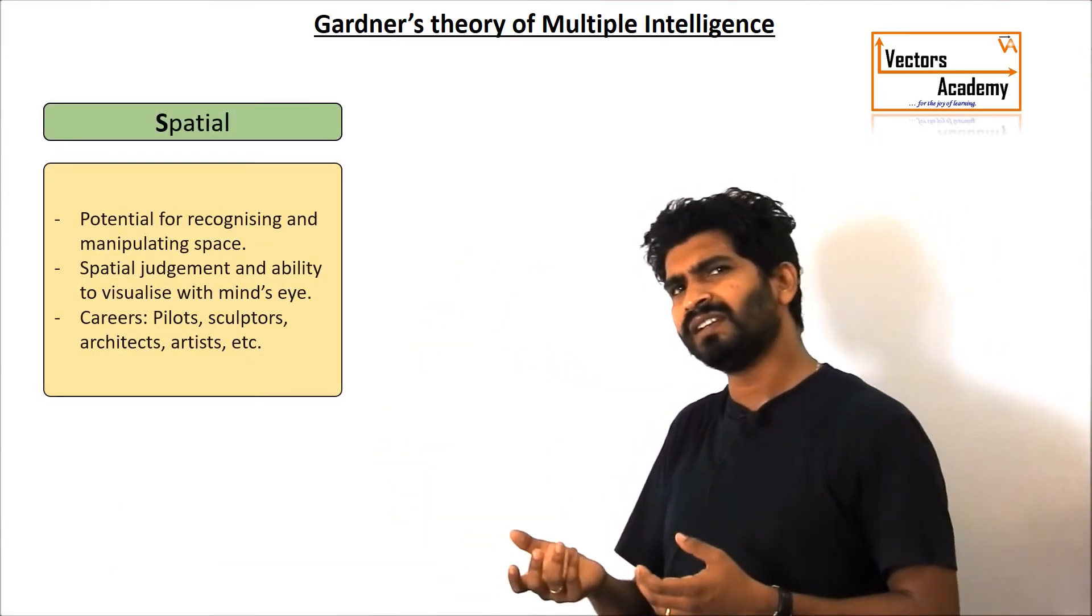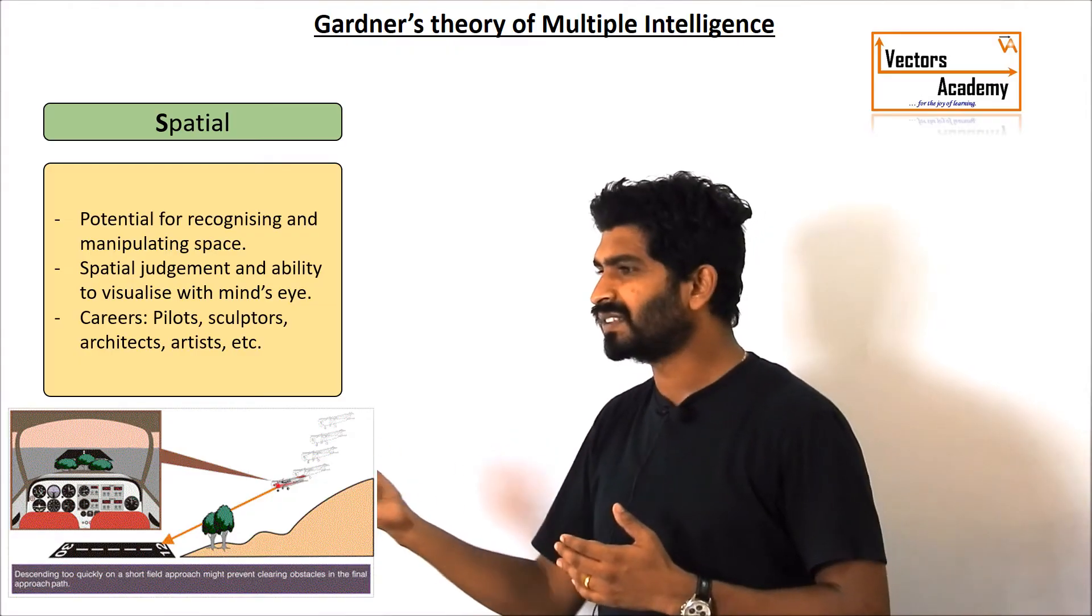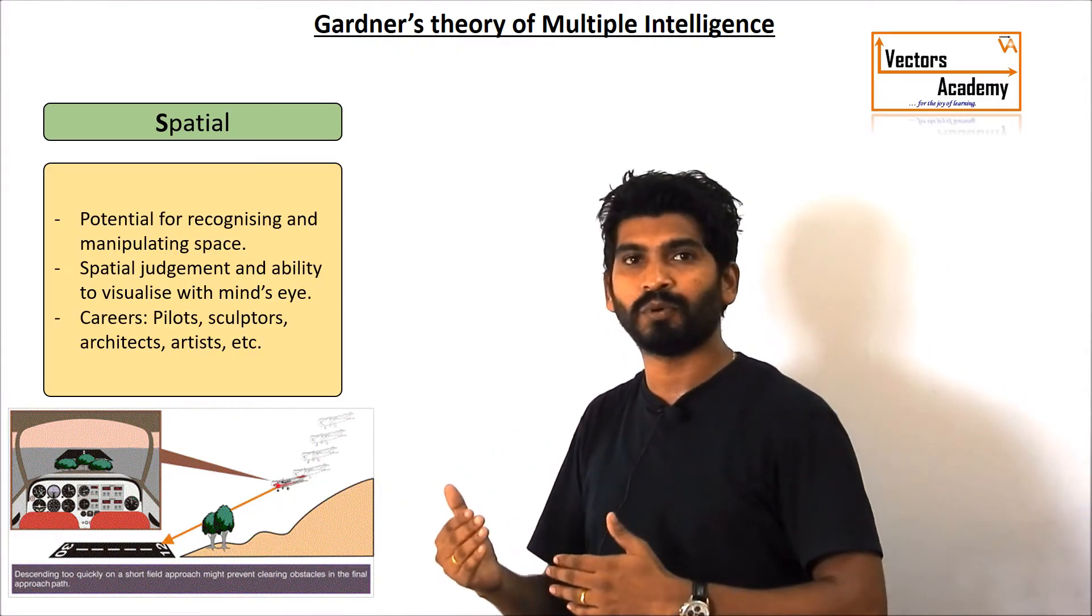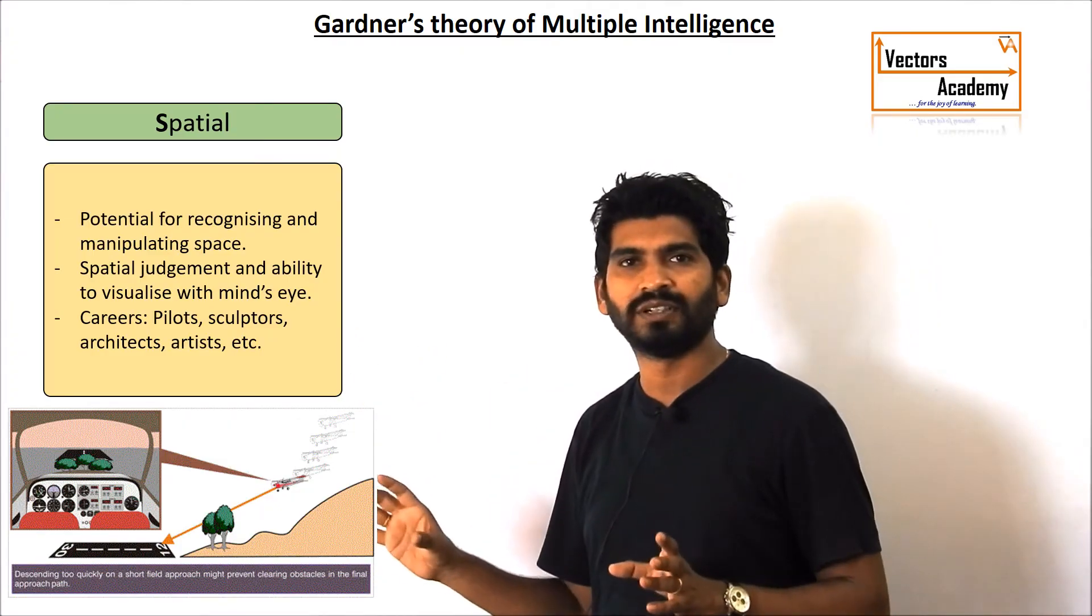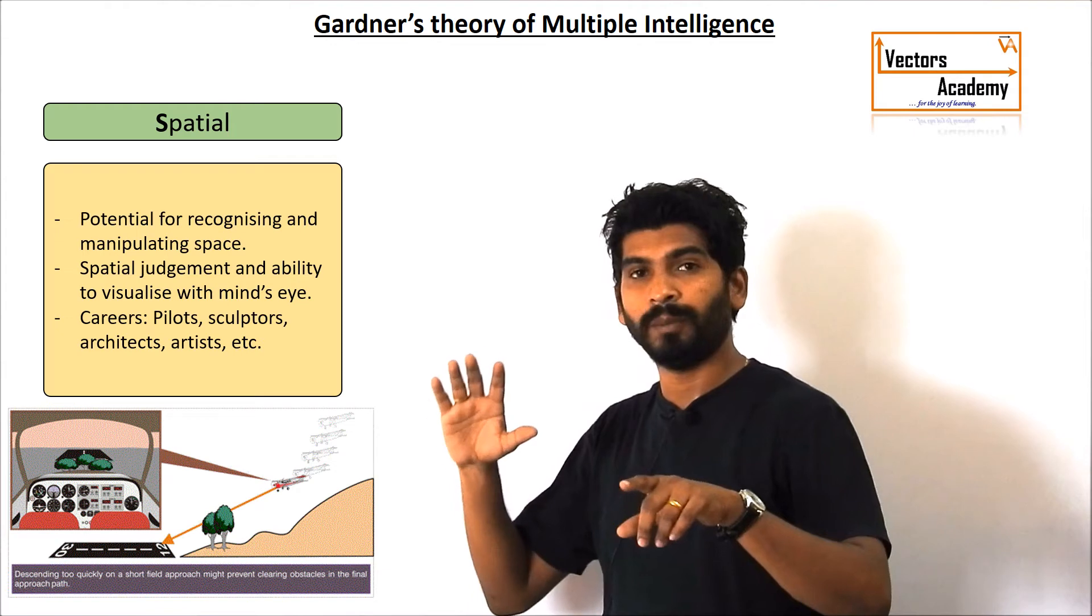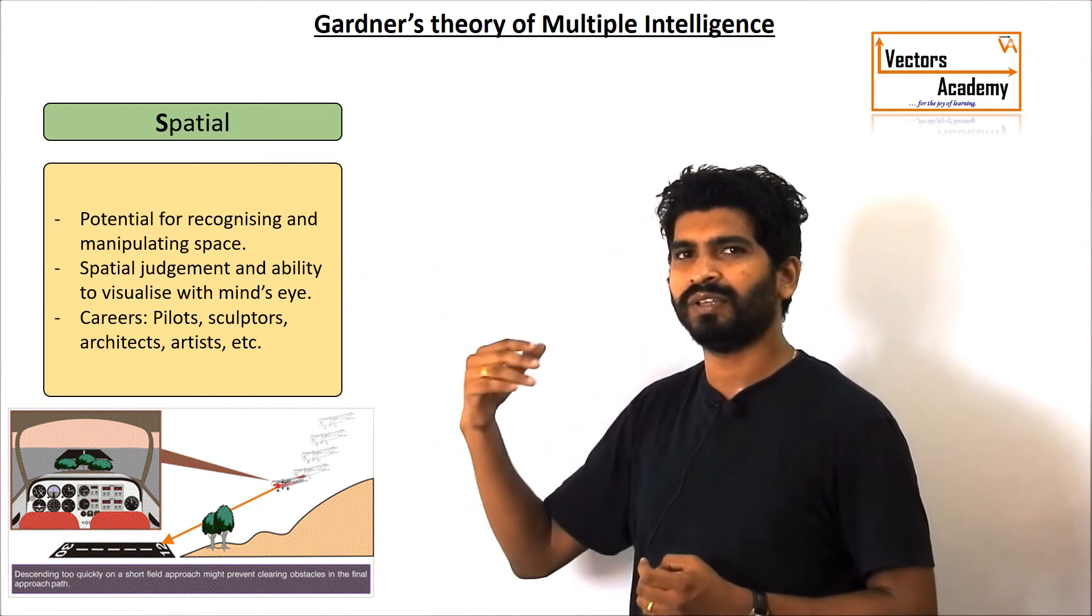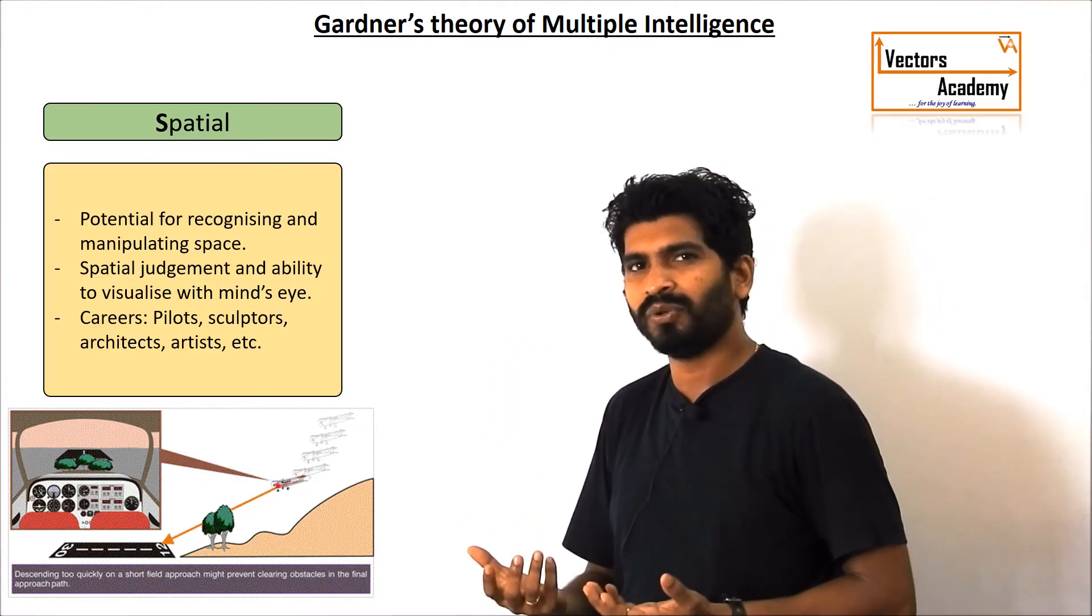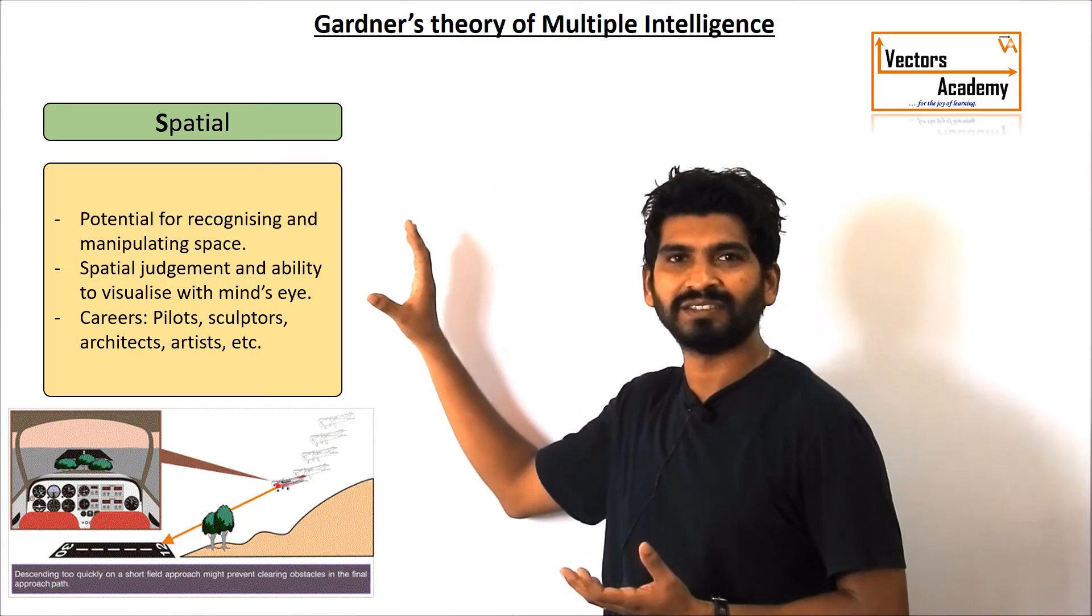Spatial intelligence. Now spatial intelligence means the people who are able to understand the space properly or understand how the logical things work in nature. Such as you can see the pilots. He should know when to apply proper breaks on the plane, when to start landing. So these are different things which the person should be able to get by just visualizing things. So that is what spatial intelligence means.